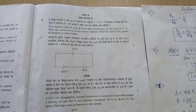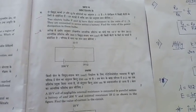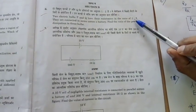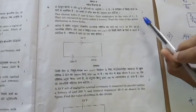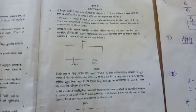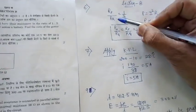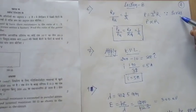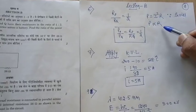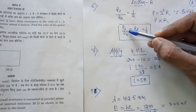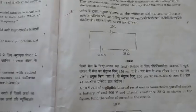Section B, Question 6: two balls P and Q have a resistance ratio of 1:2. Find the power dissipation when connected in series. In series, power equals I²R, so power is directly proportional to resistance. Therefore, the ratio of power in P to Q equals 1:2.